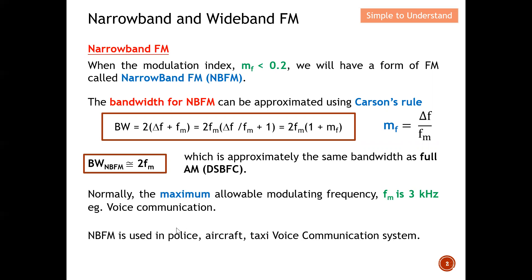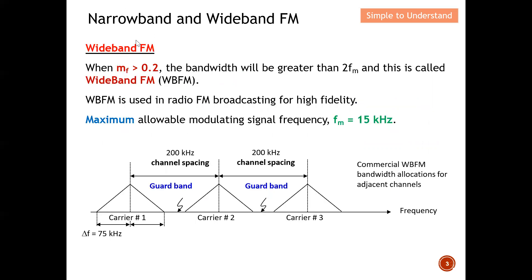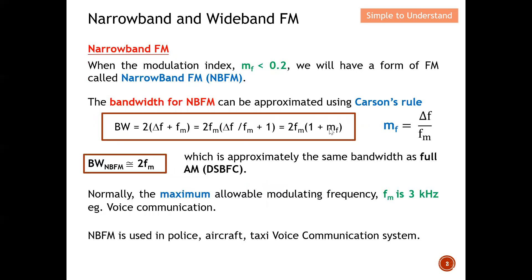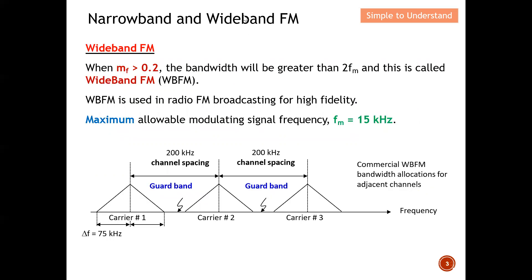For wide band FM, the modulation index is greater than 0.2, and the bandwidth will be greater than 2fm. Because mf becomes a larger number in the equation, the bandwidth becomes significantly wider. Wide band FM is used in radio FM broadcast for high-quality, clear signals, and the maximum allowable modulating frequency is 15 kHz — much larger than narrow band FM.